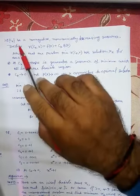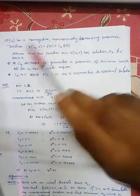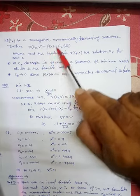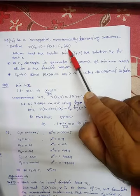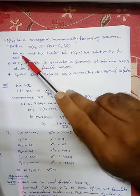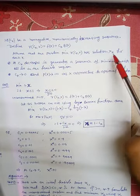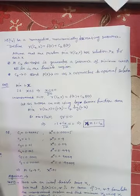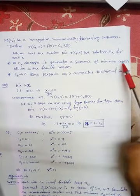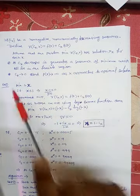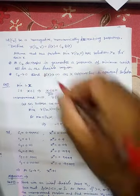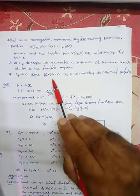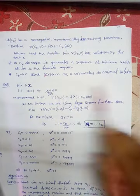Let c_k be a non-negative monotonically decreasing sequence. Define r(c_k, x) = f(x) + c_k * b(x), where b(x) is the barrier function and c_k is the penalty parameter. Assume that the problem of minimizing r(c_k, x) has solution x_k for each k. As c_k decreases — since c_k tends to 0 — it generates a sequence of minima which all lie in the feasible region. So c_k tends to 0 and b(x) tends to infinity as x approaches the optimum solution.